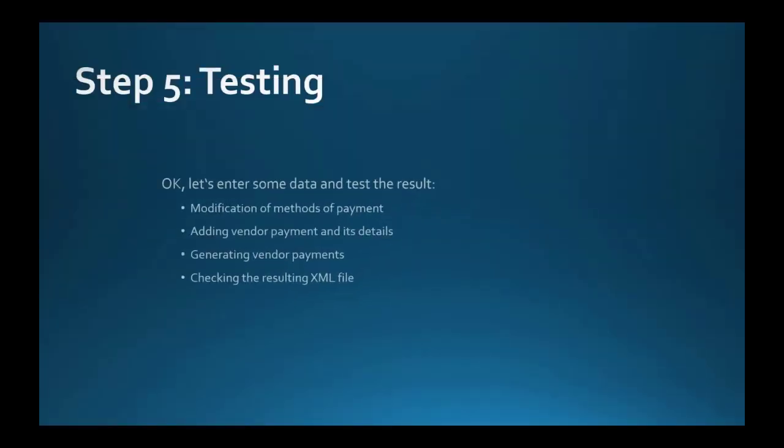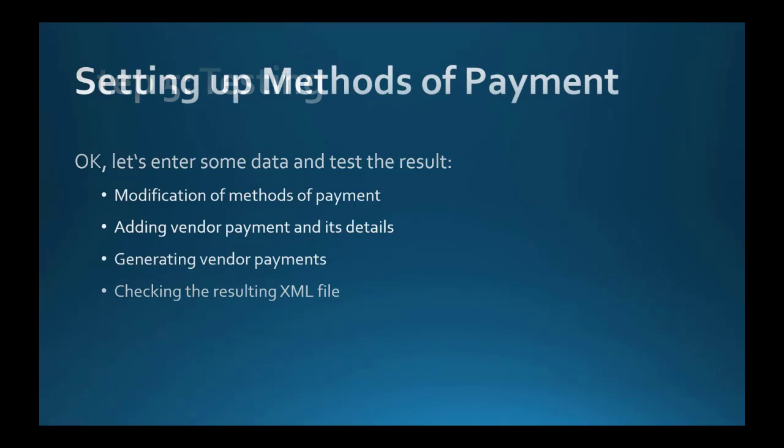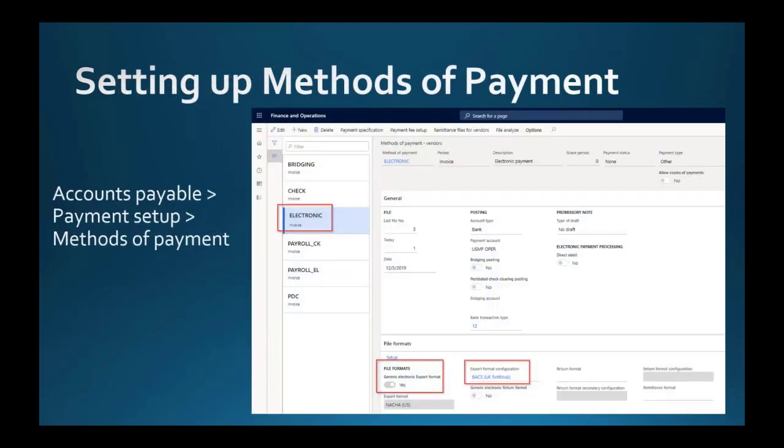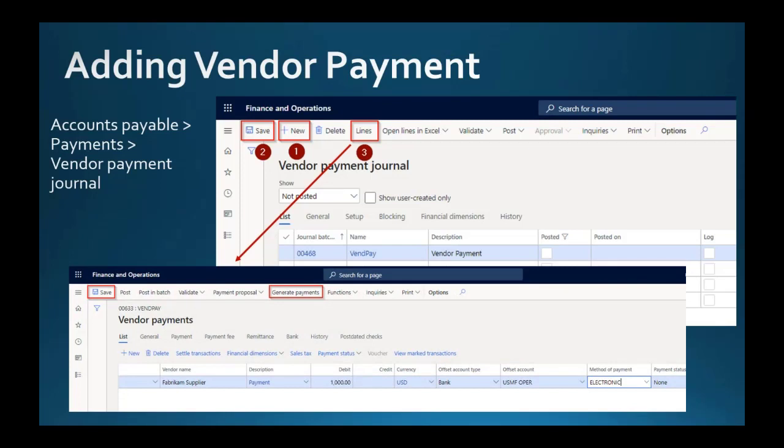Now we have created all the configurations needed as far as the electronic reporting is concerned. You have seen how it looks, how it feels, what it takes to do them. Now let's see how to use it practically. We're going to use this in vendor payments, as I said earlier. Now before that we will have to make some modifications. In the setup of methods of payments, the modifications are such as you can see here on the slide and afterwards we're going to go and open vendor payment journal where we will enter new line and we're going to generate payments and the result should be the XML file. So let's see if it will work.